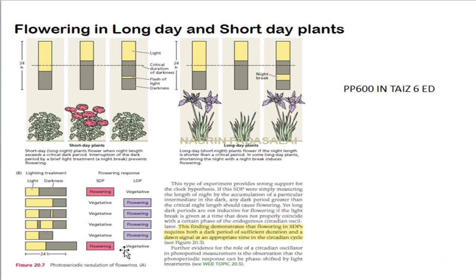They asked a question about flowering in short day plants and long day plants. Short day plants — the other name is long night plants — meaning when night length exceeds the critical dark period, they need a long night to flower. If we interrupt the nighttime with a flash of light, it is called a night break, which prevents flowering.